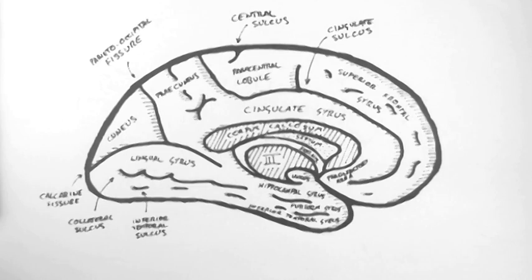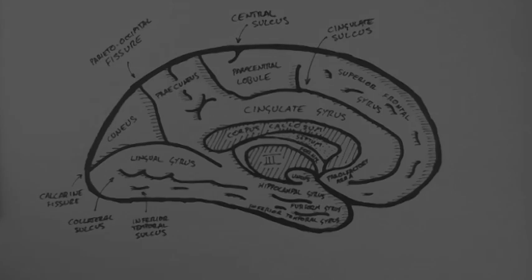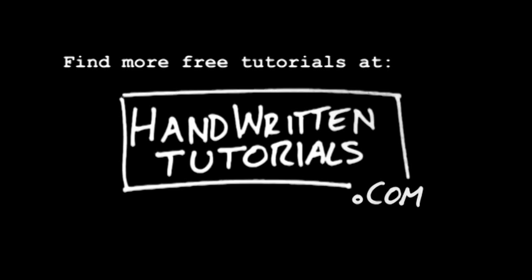And that's an overview of the gross cortical anatomy of the medial aspect of the hemisphere. In the next video we're going to look at the functional anatomy of this same surface of the hemisphere. For more free tutorials and the PDF of this tutorial, visit www.HandwrittenTutorials.com